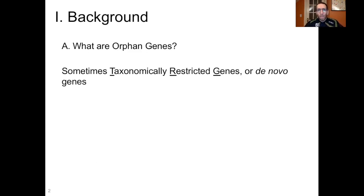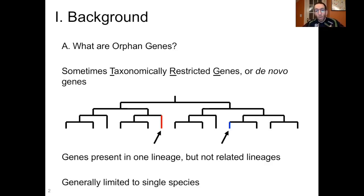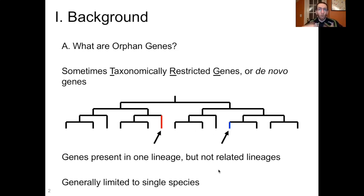Before we get into this one, we need to cover a little bit of background information. What are orphan genes? Sometimes you hear these called taxonomically restricted genes, or TRGs, or sometimes just de novo genes. These are genes that are present in a single lineage but not related lineages, and generally they are restricted to a single species. In this simple phylogeny right here, where we have our common ancestor at the root and a bunch of extant species at the terminal branches, the branches indicated with red and blue contain genes that are unique — a red gene and a blue gene only found in those two lineages — and we would consider those orphan genes.